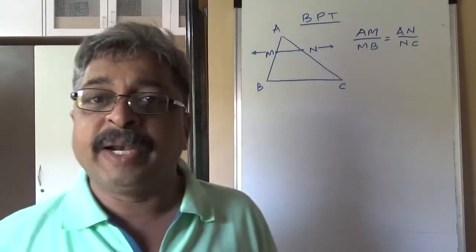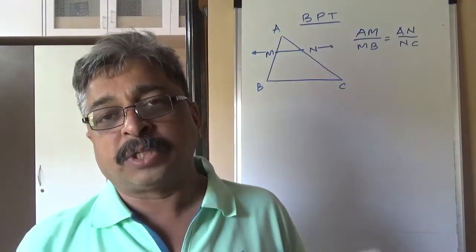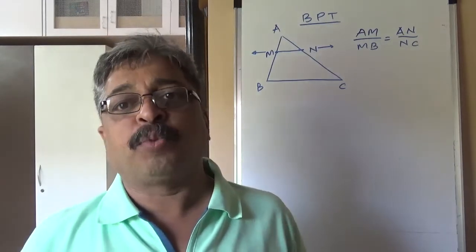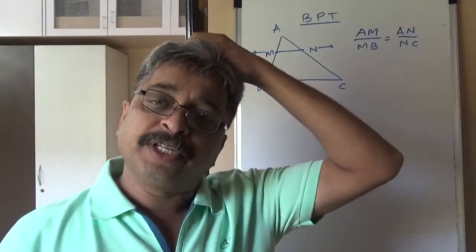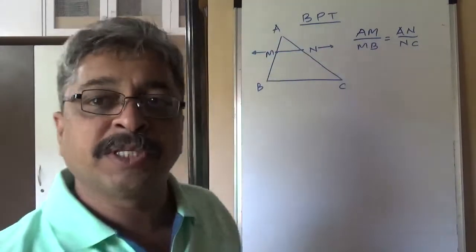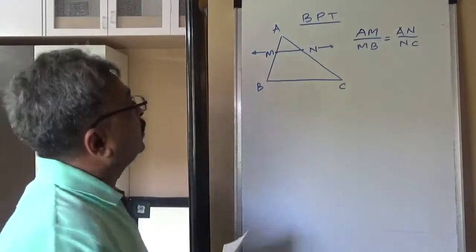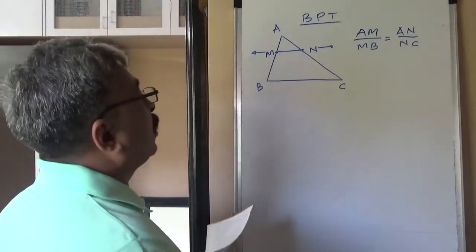then AM upon MB is equal to AN upon NC. Essentially, segment MN that you take on the two sides of the triangle, M point on AB and N point on AC should be such that if it is parallel to line BC, the third side of the triangle, then the ratios that they give are equal.